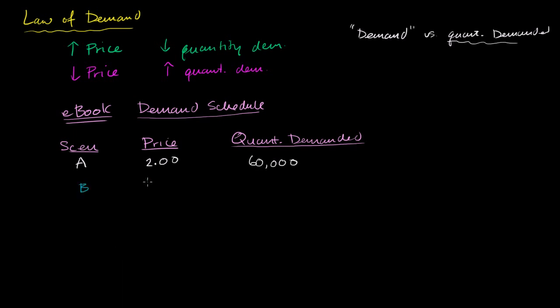Scenario B, I could raise the price by $2. So it's now $4. And then that kills off a lot of the demand. Now the quantity demanded goes down to 40,000 people downloading it. Then I could go to scenario C if I raise by another $2. So now I'm at $6. Now that lowers the quantity demanded to 30,000. And I'll do a couple more of these.